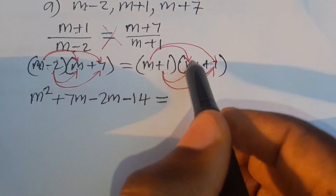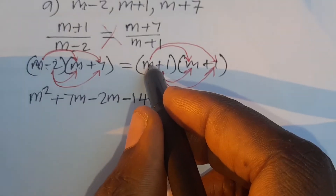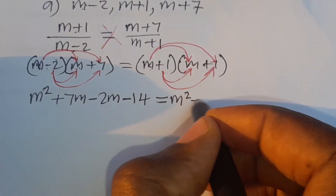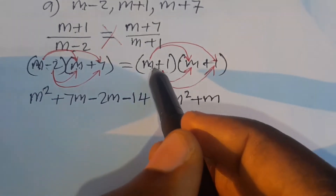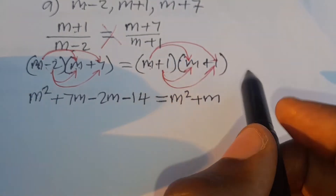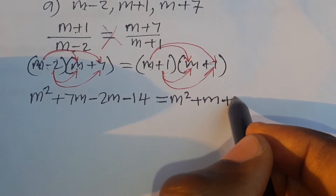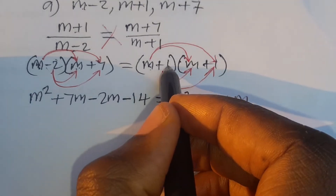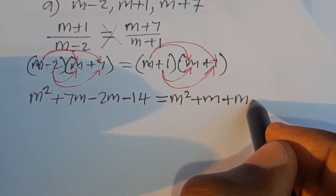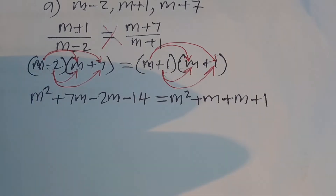On the right side: m times m is m squared, then m times positive 1 is positive m, then 1 times m is positive m, and 1 times 1 is 1.